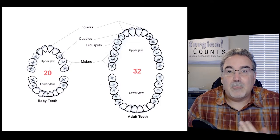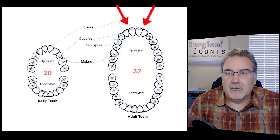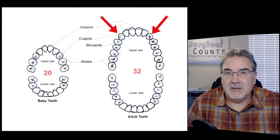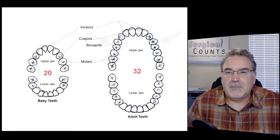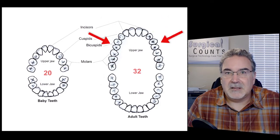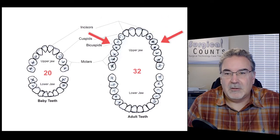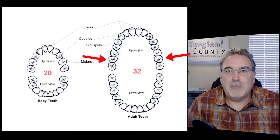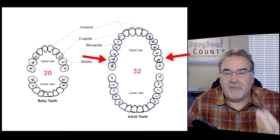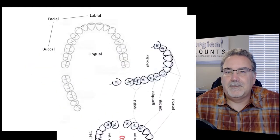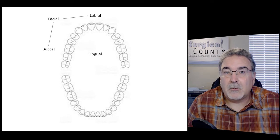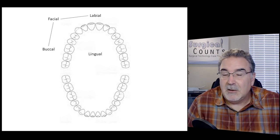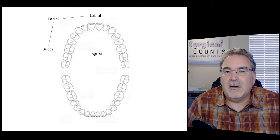Up front, we have incisors that cut through the food. We have cuspids, which have a single point. We have bicuspids, which have two points. And then in the back, we have molars, which have four or so points on them. Just like with the body, we have directional terms — and when we're talking about the mouth and teeth, we have directional terms here as well.